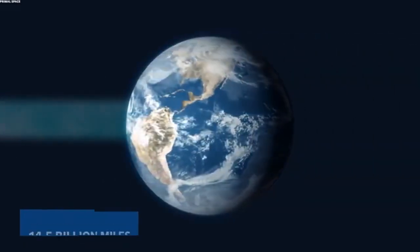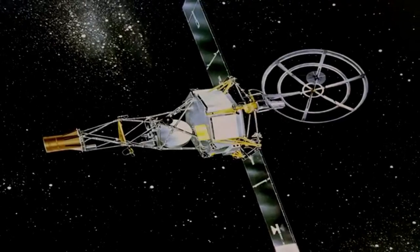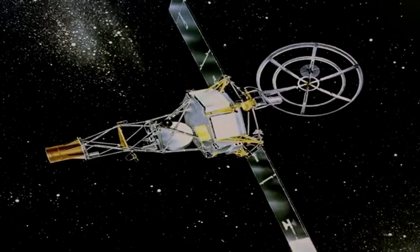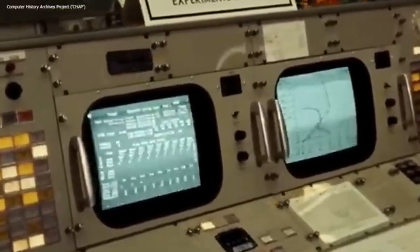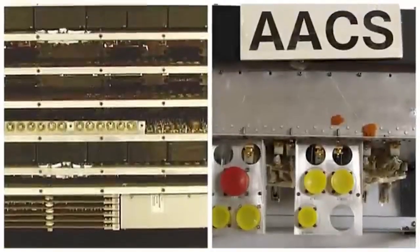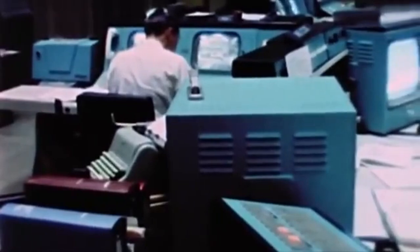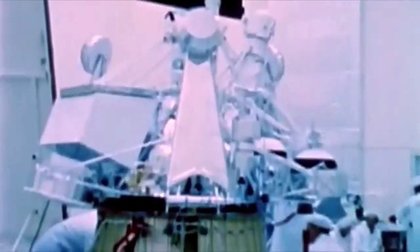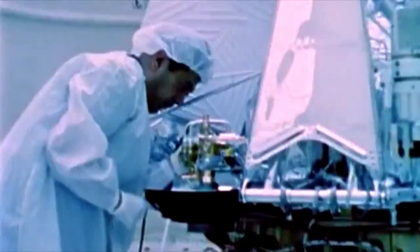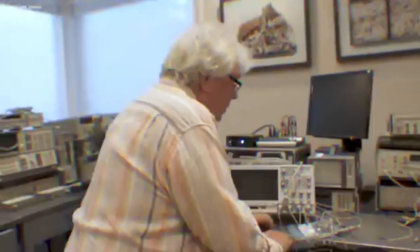The Deep Space Network, DSN, is an extensive network of enormous radio antennas strategically positioned across the globe, enabling NASA to establish communication links with spacecraft exploring the far reaches of our solar system and beyond. The DSN collaborates with various space agencies, including the Soviet, Chinese, Indian, and Japanese Deep Space Networks, along with the European Space Agency's ESTRAC. The DSN comprises three deep space communication facilities situated approximately 120 degrees apart: Goldstone in California's Mojave Desert, Madrid in Spain, and Canberra in Australia. This strategic placement ensures continuous coverage and observation of spacecraft as the Earth rotates.